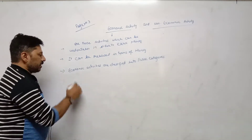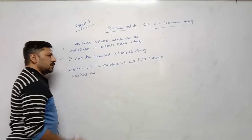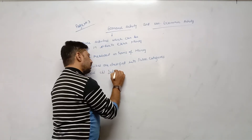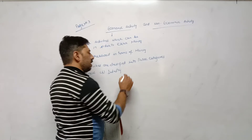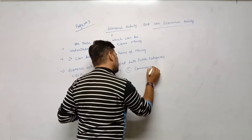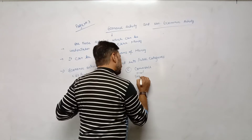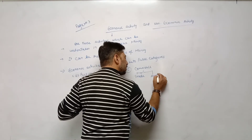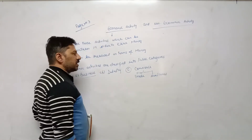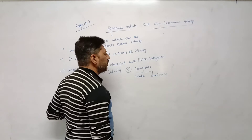Three categories we have already done in OC. The three categories are: A) Business, B) Industry, and C) Commerce. Commerce includes two things: Trade and Auxiliaries to Trade. Business, Industry, and Commerce are the three different types of categories.